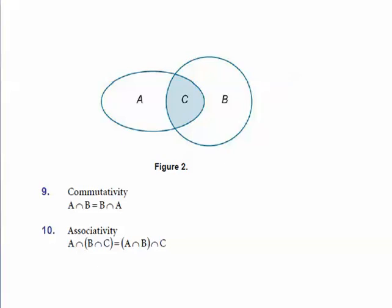Associativity simply states that if we are taking the intersection of the last two sets, then we can take the intersection of the first two sets and then take the intersection with the other remaining set.